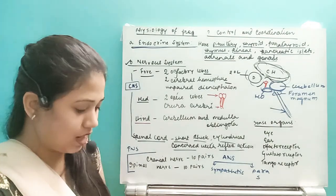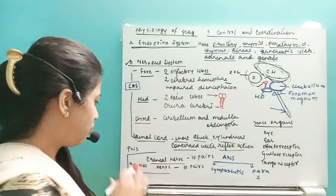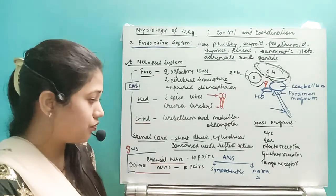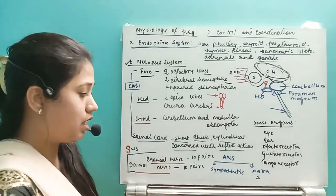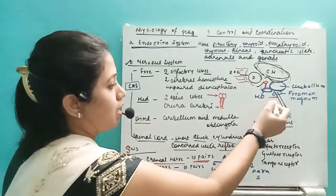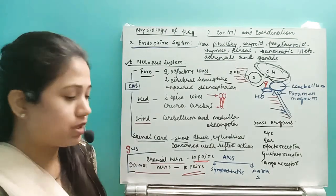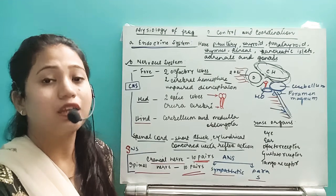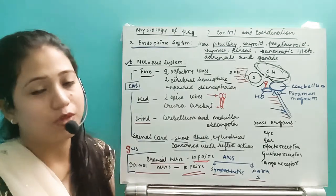The nerves that arise from the brain and the spinal cord are known as cranial nerves and spinal nerves, forming the somatic neural system. The nerves arising from the brain are the cranial nerves — there are ten pairs of cranial nerves in frogs, while in humans there are twelve pairs. The nerves arising from the spinal cord are the spinal nerves, and frogs also have ten pairs of spinal nerves. After that, the autonomic nervous system — sympathetic and parasympathetic — is related to emergency situations and how metabolism changes when we are in danger.